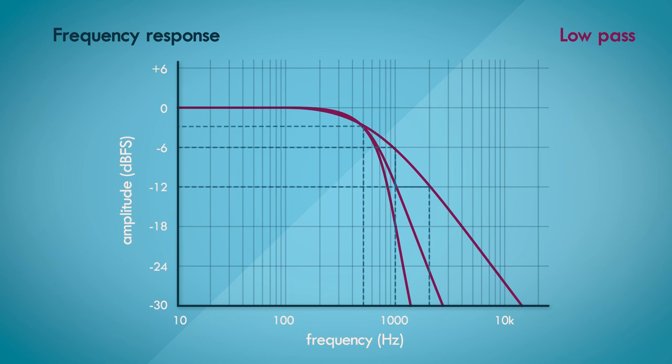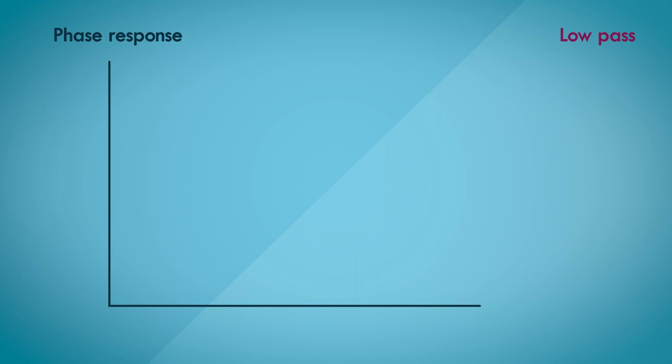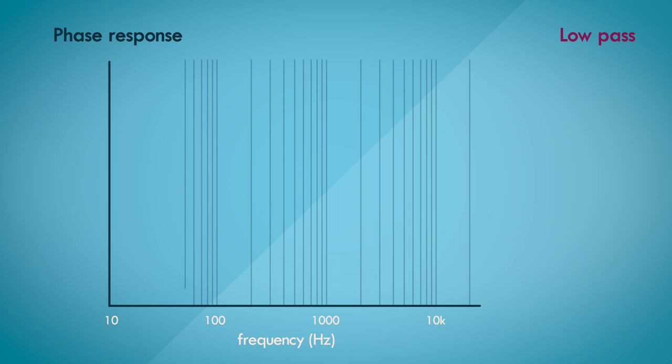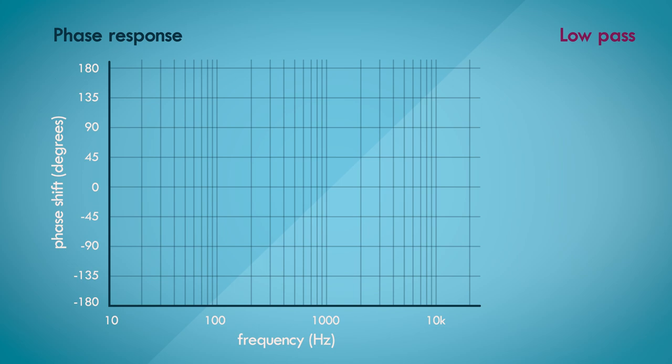The frequency response graph is quite intuitive, right? It shows us the gain or attenuation of different frequencies that pass through the filter. Another important aspect of filters is the phase response. And similar to frequency response, we have a phase response graph. The frequencies are plotted logarithmically on the x axis and the relative shift in phase of the frequencies in degrees on the y axis.